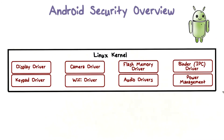At the lowest level is the Linux kernel. It provides a level of abstraction between device hardware and the upper layers of the Android software stack.